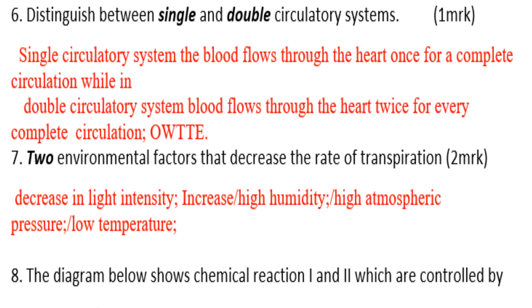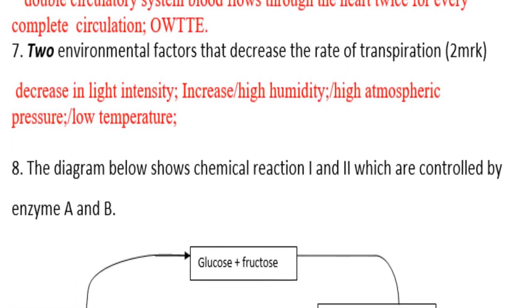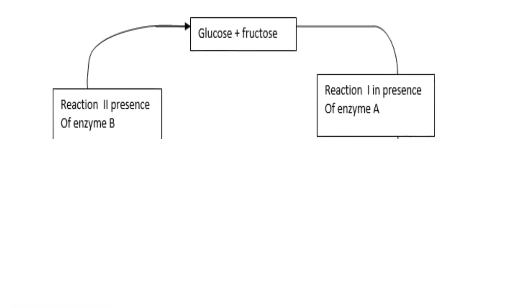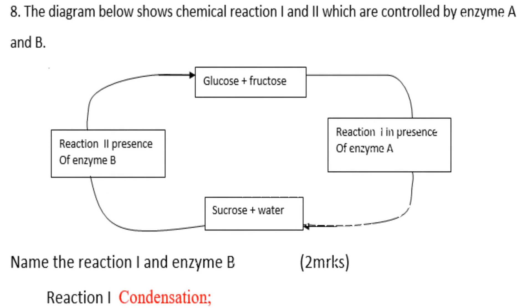Next, you are told the diagram below shows a chemical reaction. The diagram is coming here and we are going to see it clearly. It shows a chemical reaction controlled by enzymes A and B.